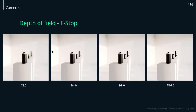Last but not least, for the f-stop: with an aperture of f/2.0 we get a very blurry background, and as we move up the scale with each step we get more sharpness in the background, until at f/16 we have a completely sharp image.